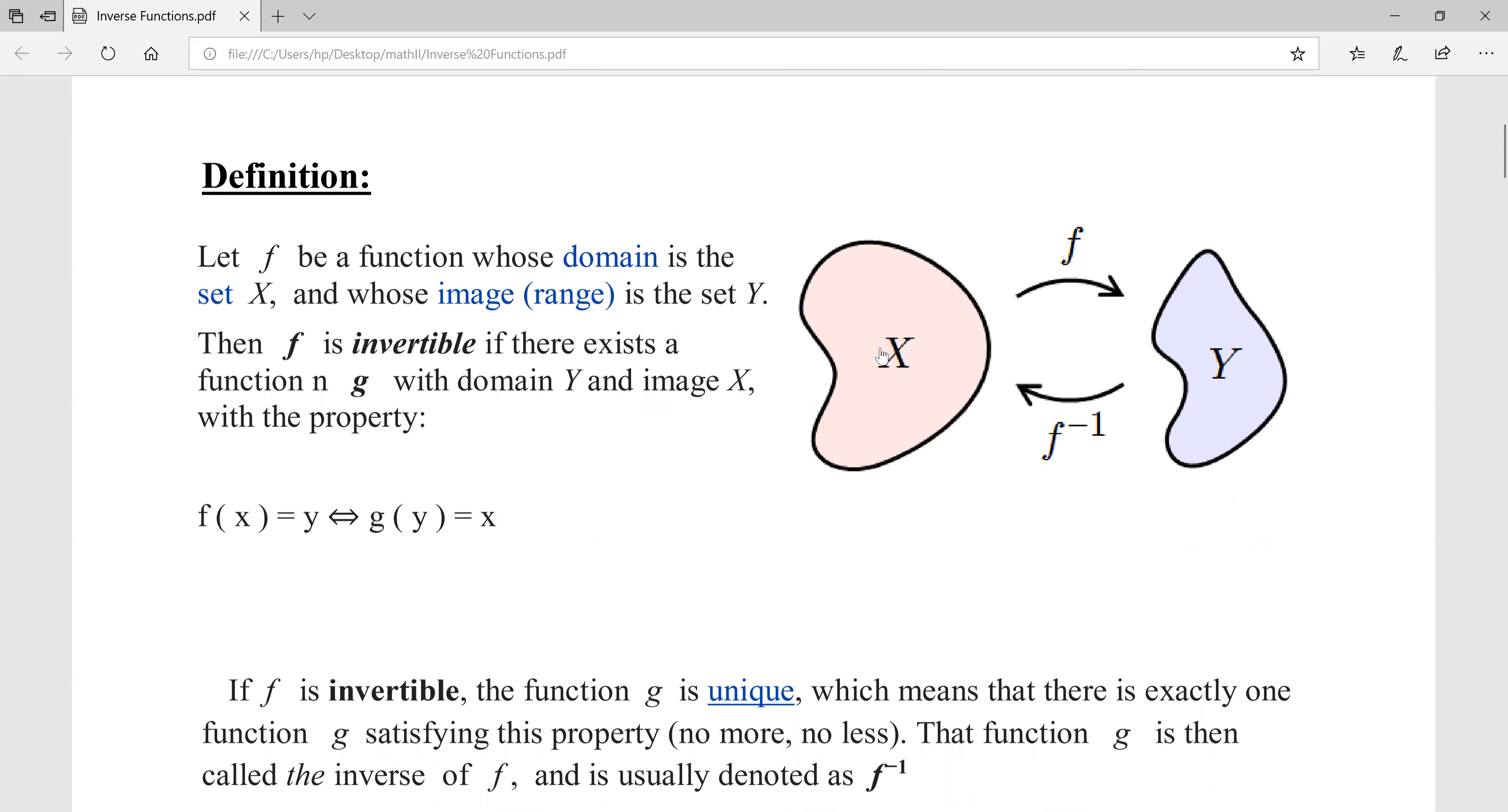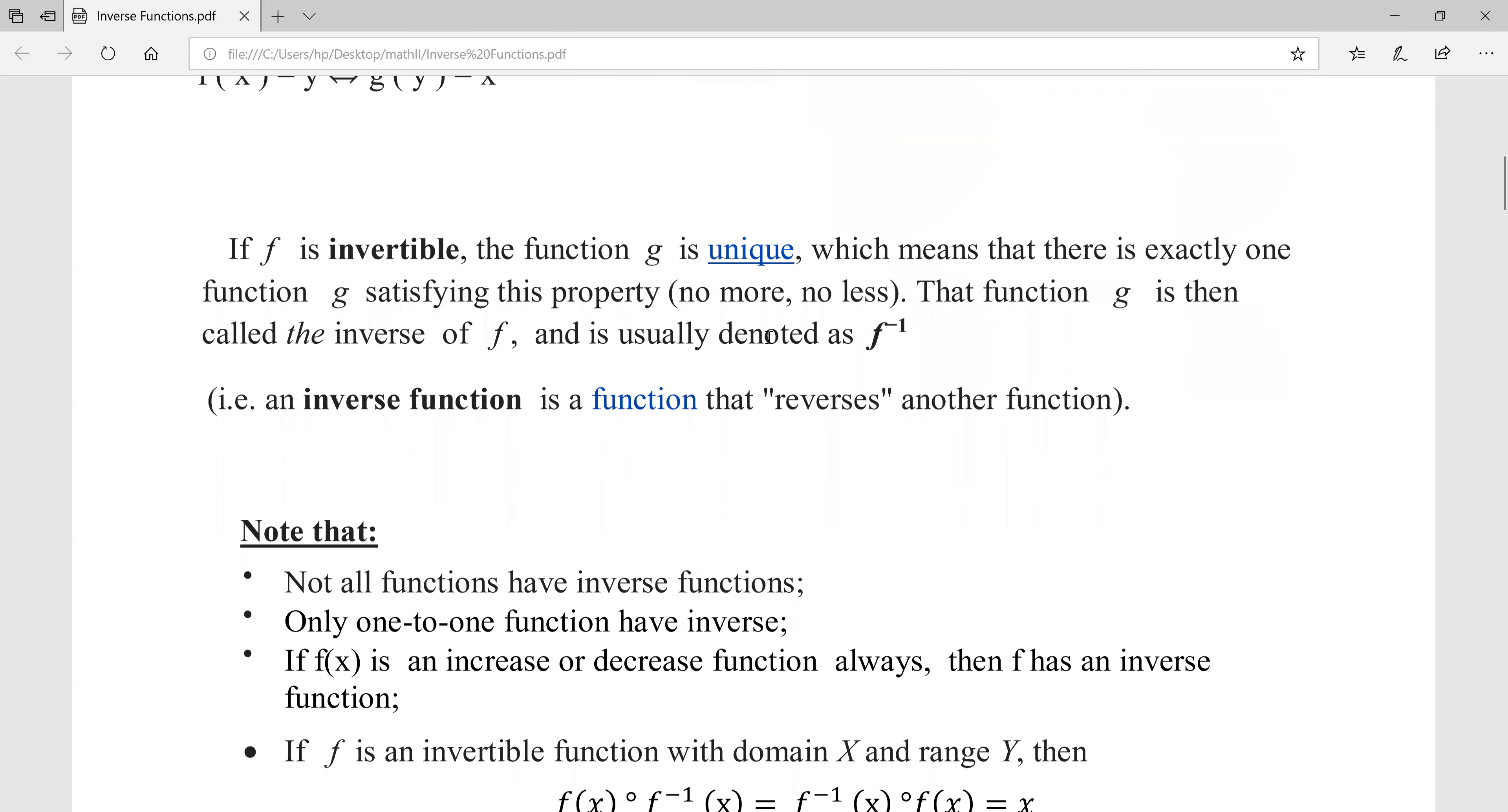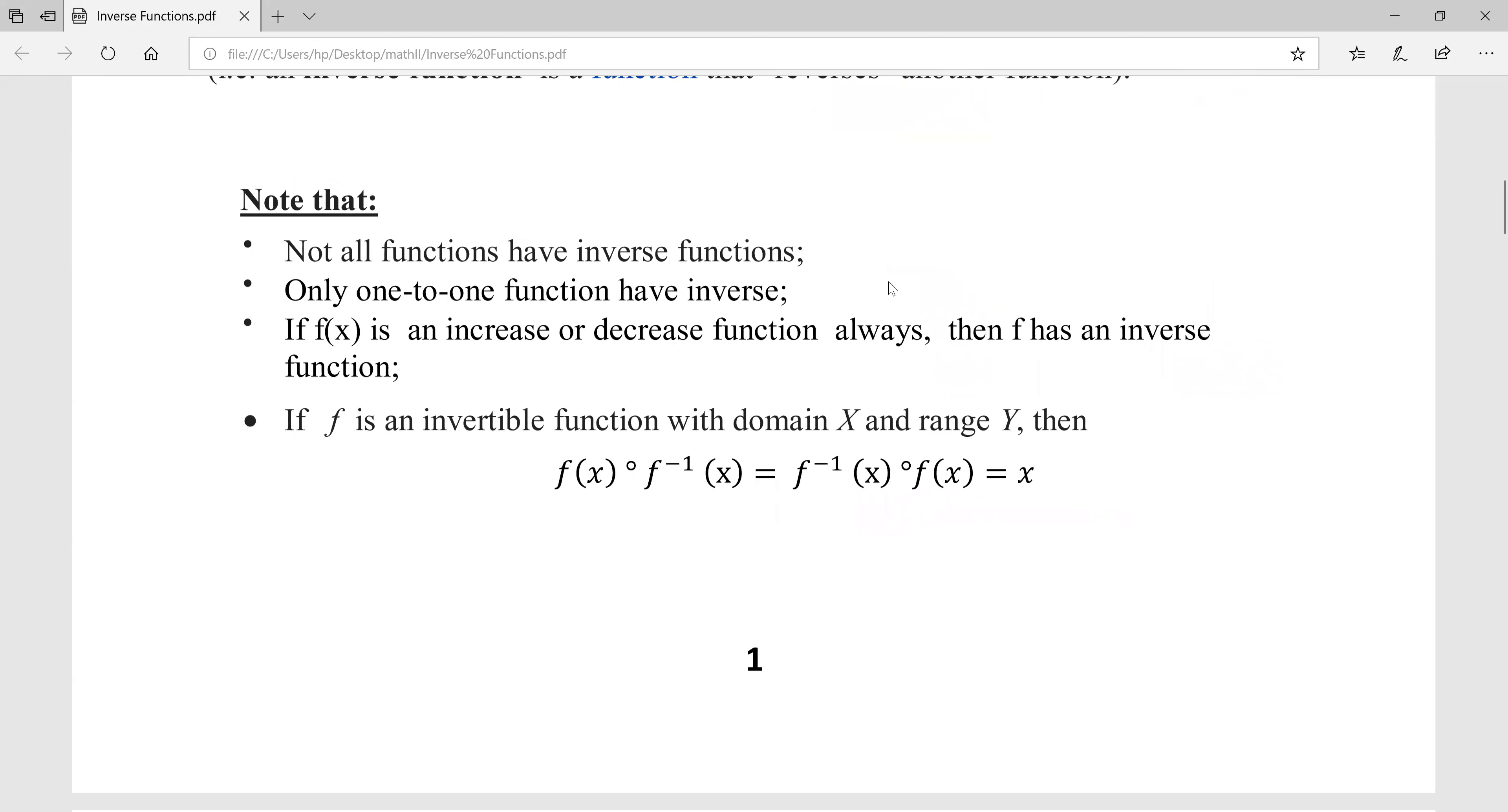G will be invertible, meaning it's capable of having an inverse, if and only if the function is unique. The f takes the answer from X and the answer from Y, and the f inverse is the answer from Y and the answer from X.